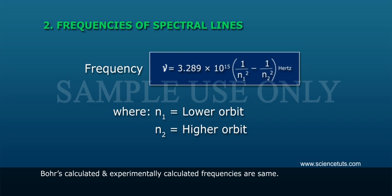2. Frequencies of spectral lines. Bohr calculated and experimentally calculated frequencies are same. Frequency nu is equal to 3.289 into 10 to the power of 15, 1 by n1 square minus 1 by n2 square hertz, where n1 is equal to lower orbit, n2 higher orbit.